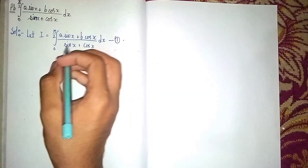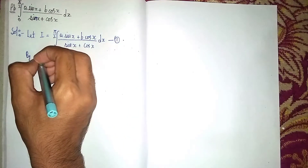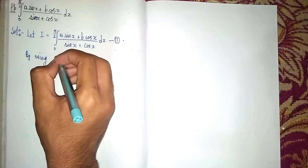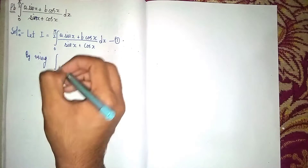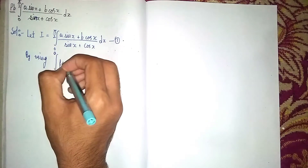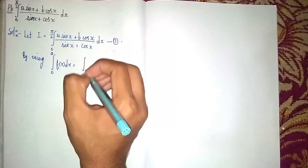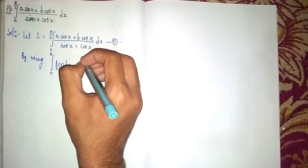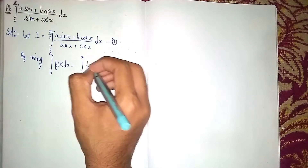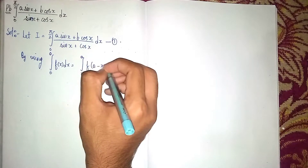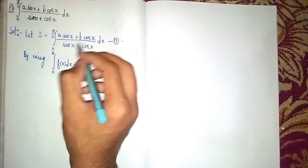Now we are using an integration property. The property is: the integral from 0 to a of f(x) dx is equal to the integral from 0 to a of f(a minus x) dx. This is the property we are using here.